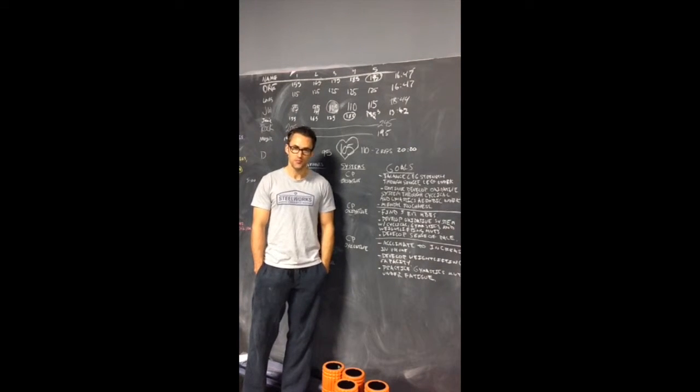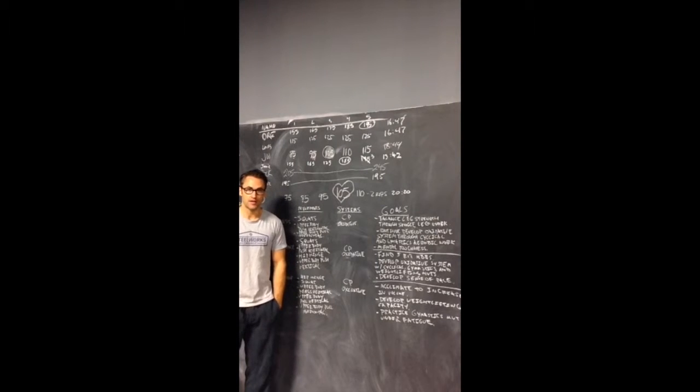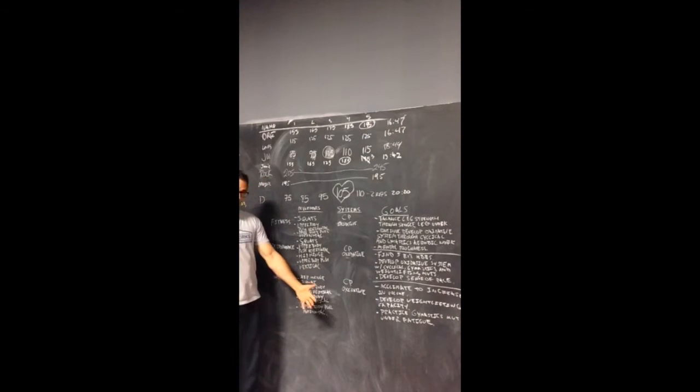We'll be right back with the competitor track. And finally, we have the competitor track's program. A lot of different movement patterns happening today. We have hip hinging, squatting, upper body pressing vertical, upper body pulling vertical and horizontal as well. Looking at developing the CP system as well as the oxidative system.